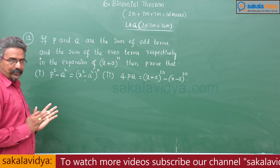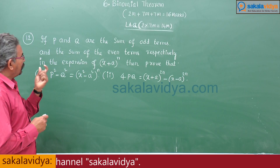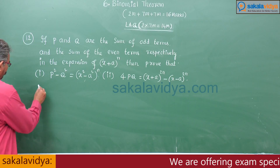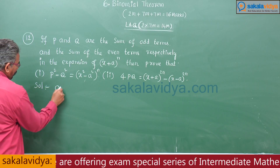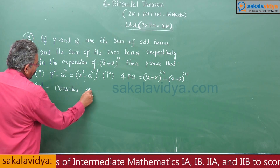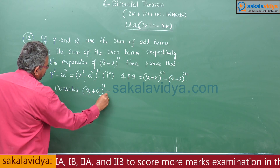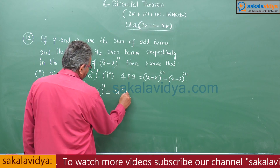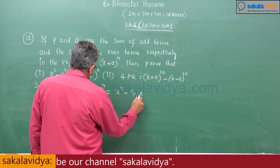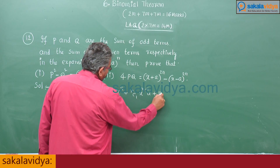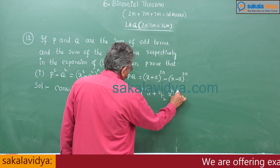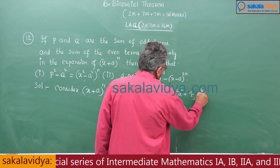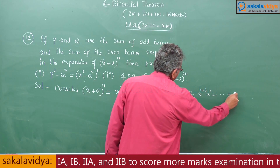First, let us expand (x + a)^n to establish the relation between P and Q. This is Newton's expansion, which can be written as x^n + nC1·x^(n-1)·a + nC2·x^(n-2)·a² + nC3·x^(n-3)·a³ + ... + a^n.